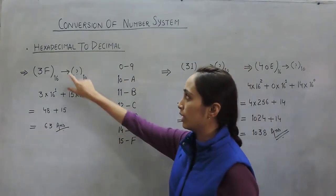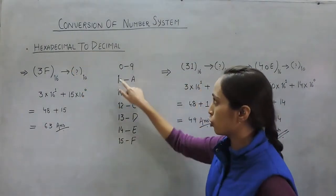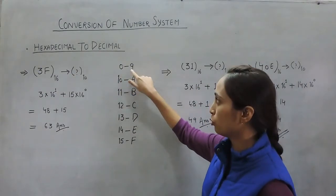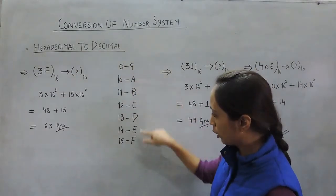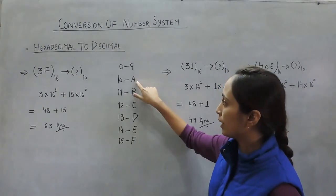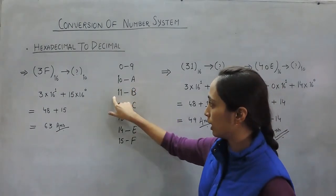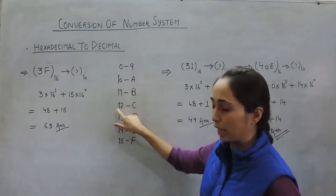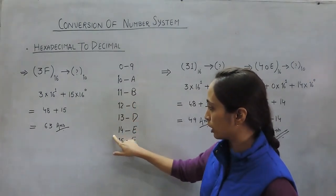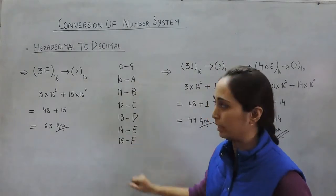Hexadecimal consists of numbers 0 to 9 and letters A to F. The letter A corresponds to number 10, B to 11, C to 12, D to 13, E to 14, and F to 15.